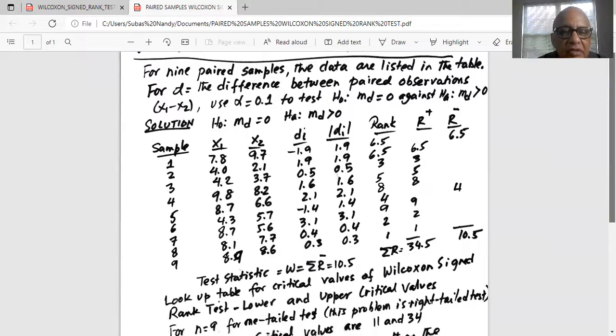So the samples, there are nine pairs of samples and first we take the difference between the x1 and x2 as suggested in the problem statement. Some of the differences are negative and some of them are positive. The differences are listed in di column. Then like before we take the absolute value of the difference, that is we remove the negative signs by putting the two vertical lines around di.